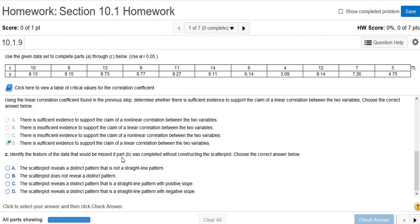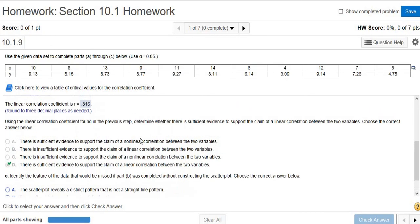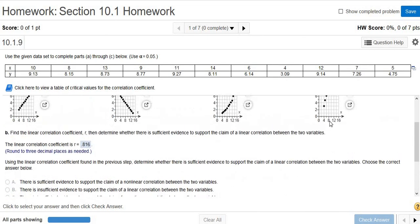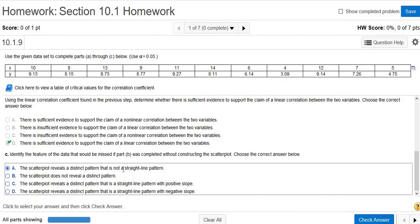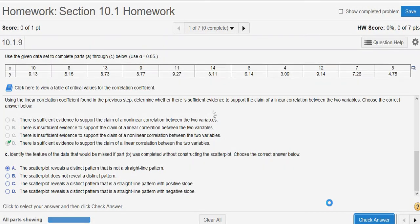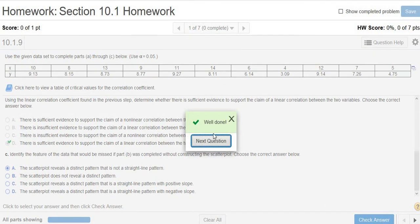Identify the feature of the data that would be missed if part B was completed without constructing the scatter plot. Yes. Very good. So according to the math, there's a straight line pattern, but this is not a straight line, right? It looks really weird. So I would say the scatter plot reveals a distinct pattern that is not a straight line pattern.